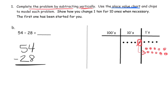So what does that look like in our standard algorithm? Well, instead of having five 10s, we now have four 10s — you can see that right here. And instead of having four 1s, we now have 14 1s, because we used to have four but then we added 10 more. So now we have 14 1s, and now we can do our subtraction.